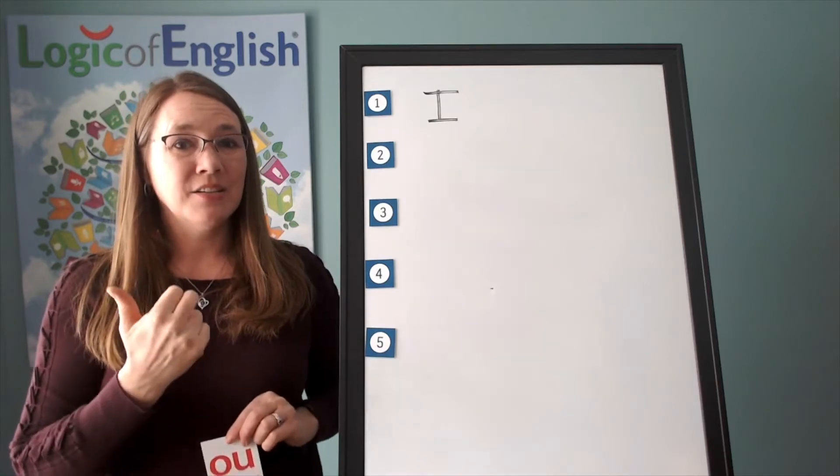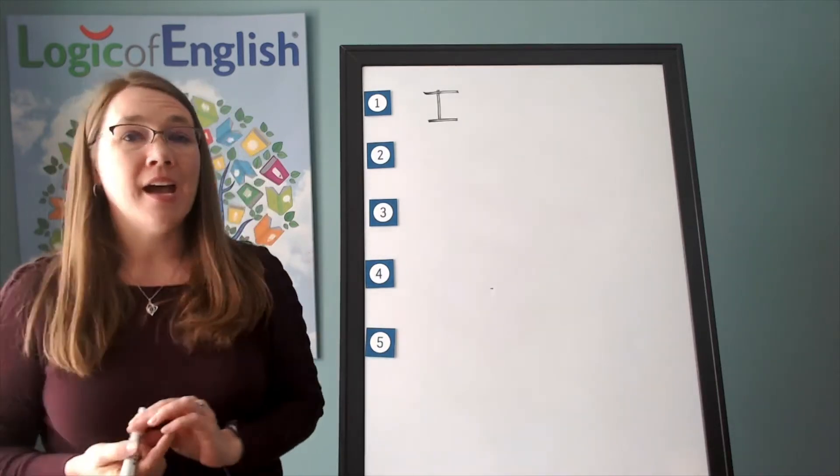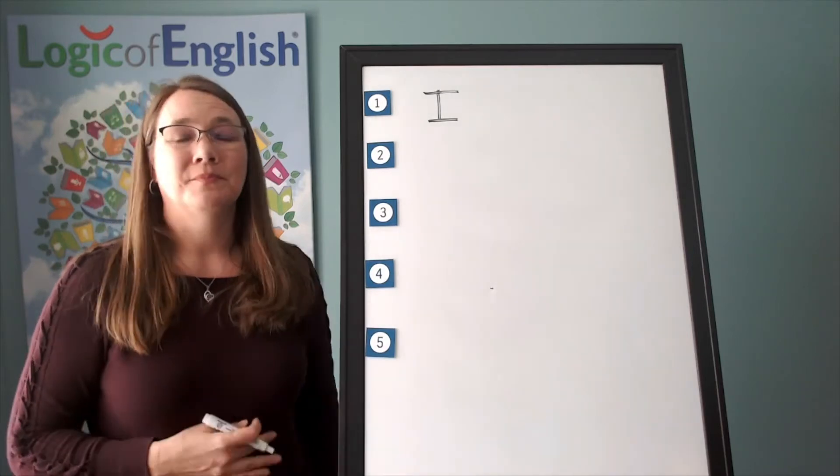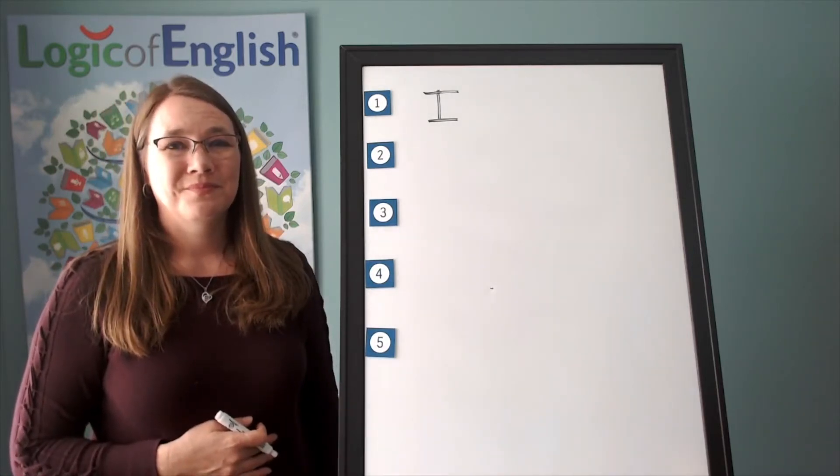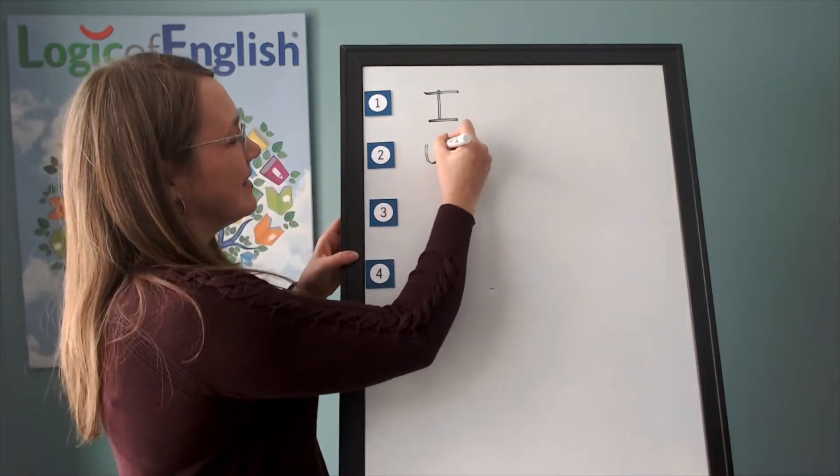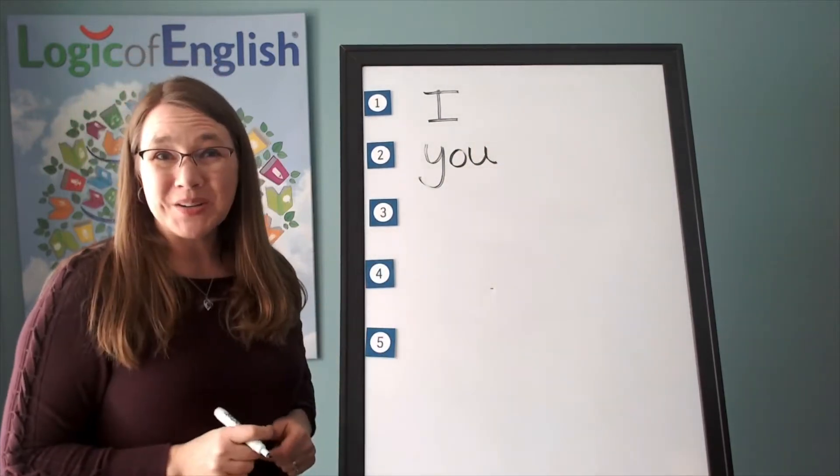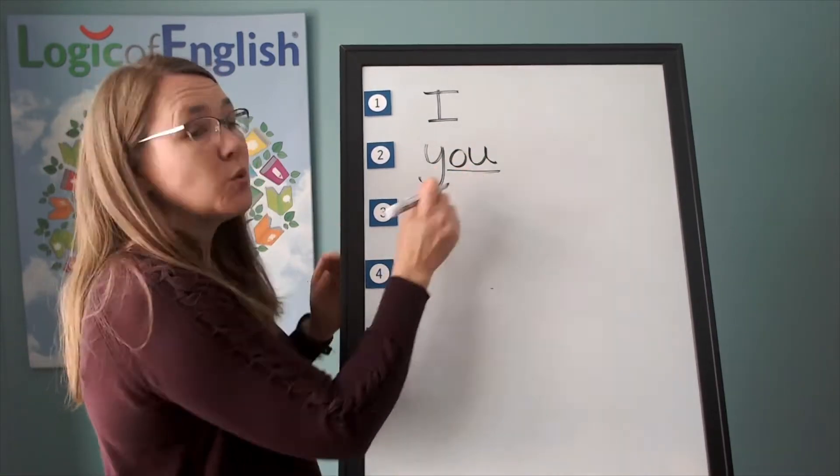Ya, oo. Got it? All right. Go ahead and write U. All right. Help me to write it. Ya, oo. How will we mark this? Well, underline the oo.